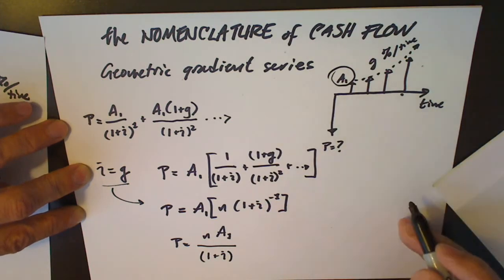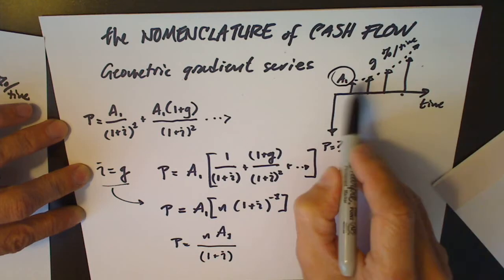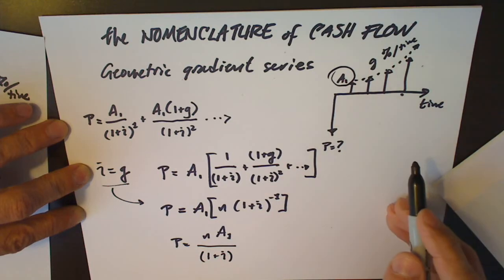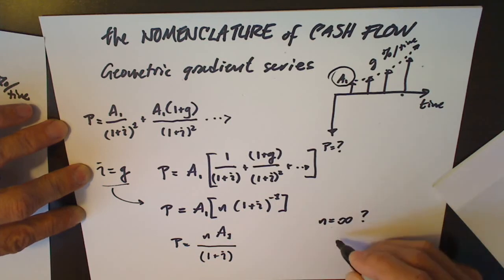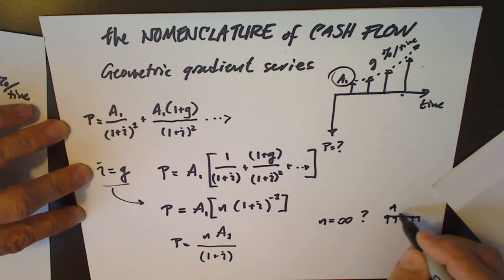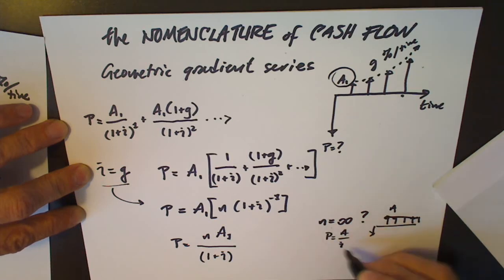That is experiencing growth in their profits. Unlike the special case where n equaled infinity for a uniform series of payments where A is constant for all n, unlike that case which reduced to P equals A over I, in this case when n equals infinity.